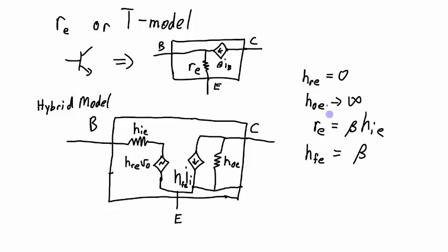So the RE or the T model is simply a version of the hybrid model with some of the parameters removed to make it a little bit simpler to analyze. And it is simpler to analyze and it is a legitimate model to use because this HOE term, it typically is very big and this HRE term typically is also going to be very small so we can ignore those. So these are two of the major models that are used for BJTs. And in most of my videos, I use the T model because it's a simpler one to use. And typically just about as precise in the modeling.